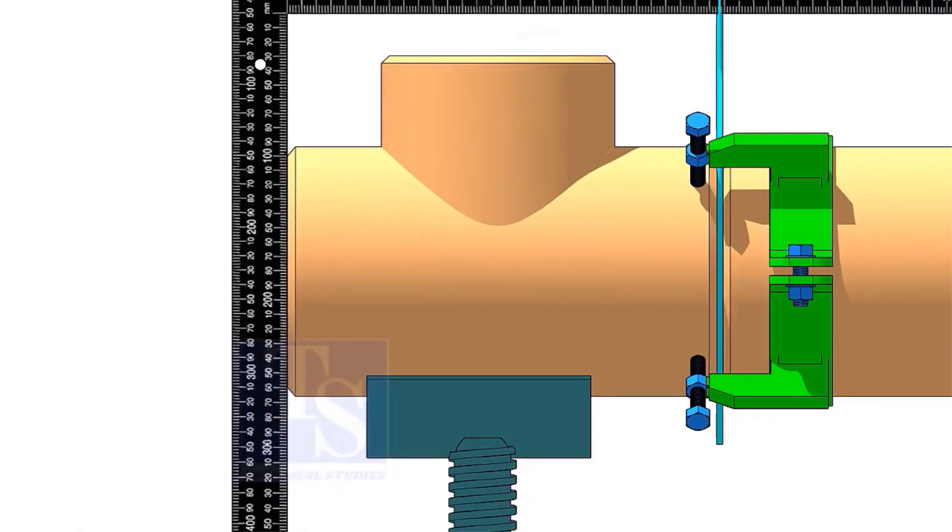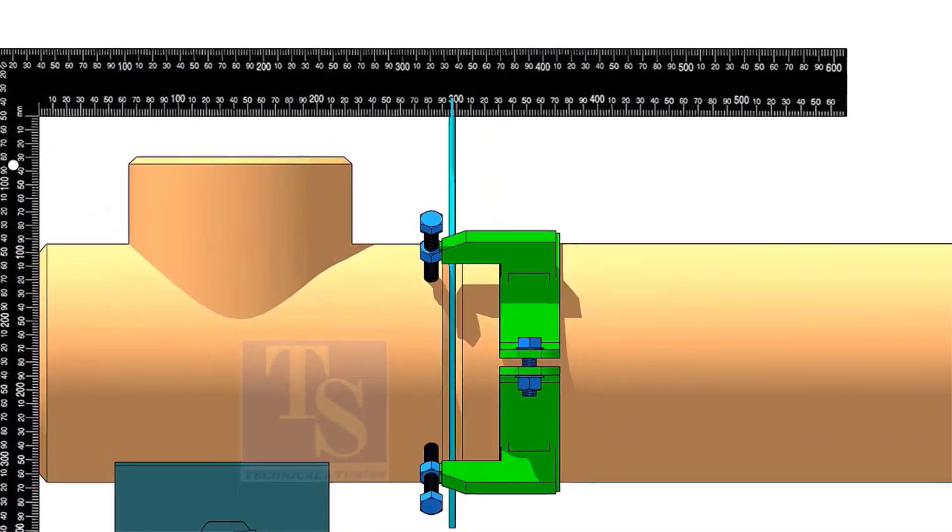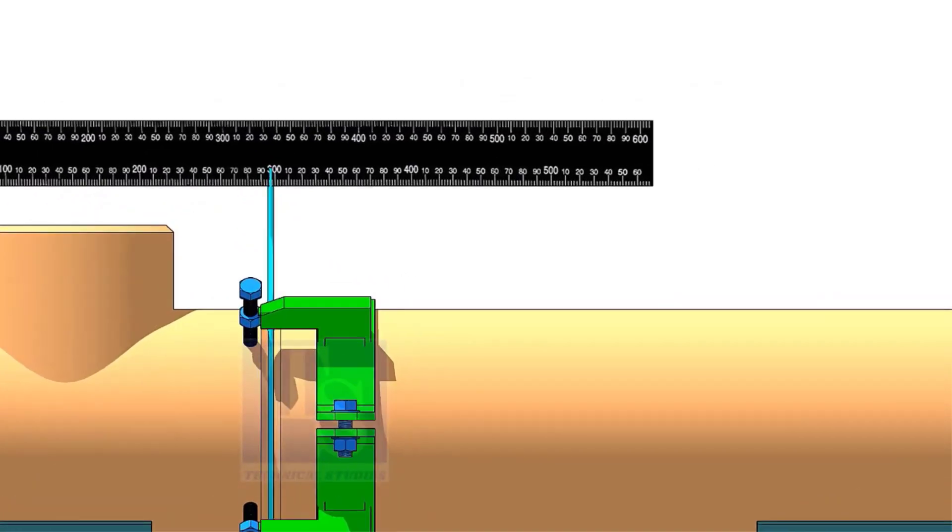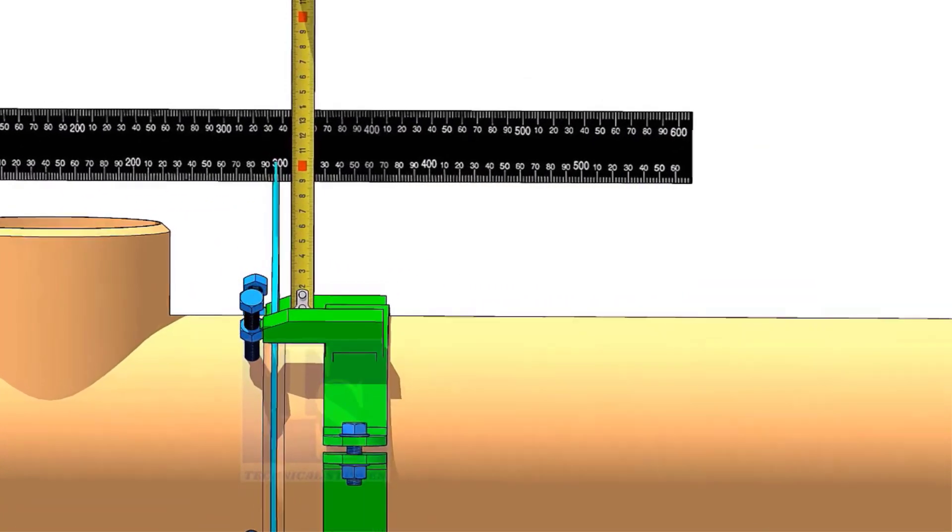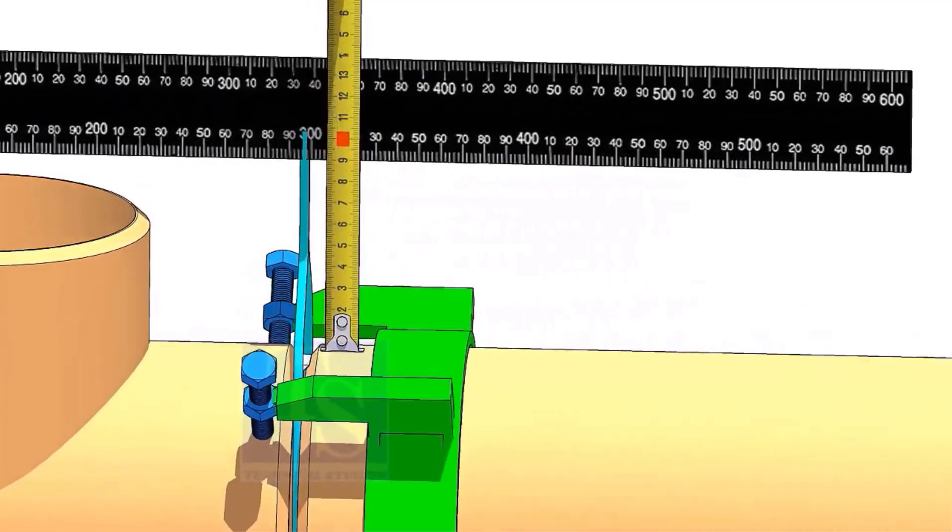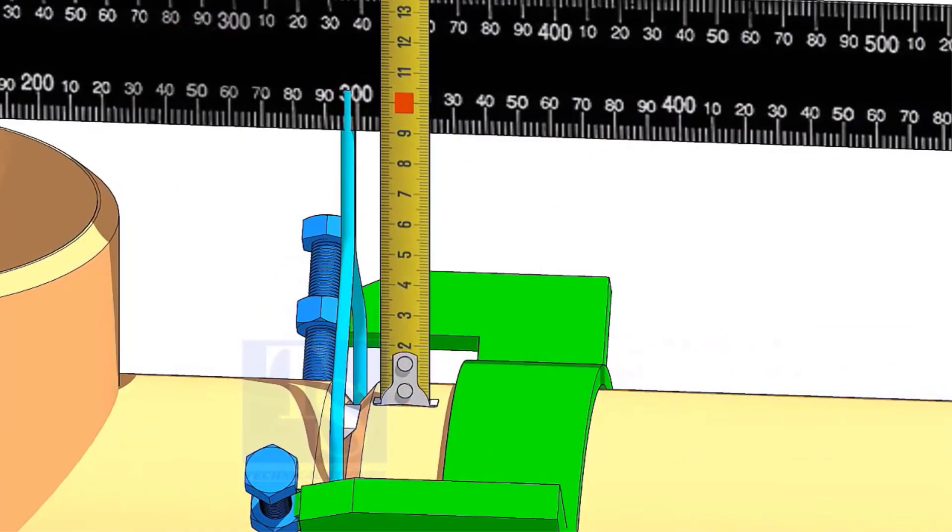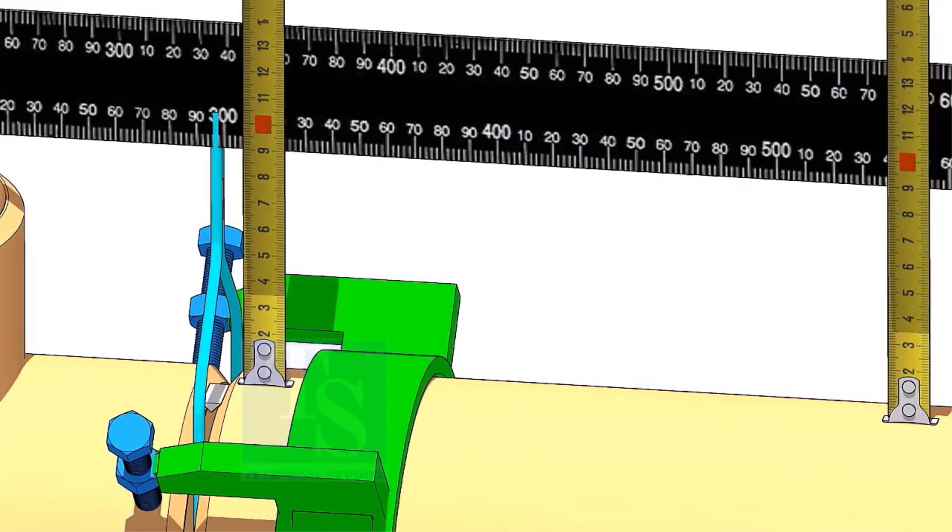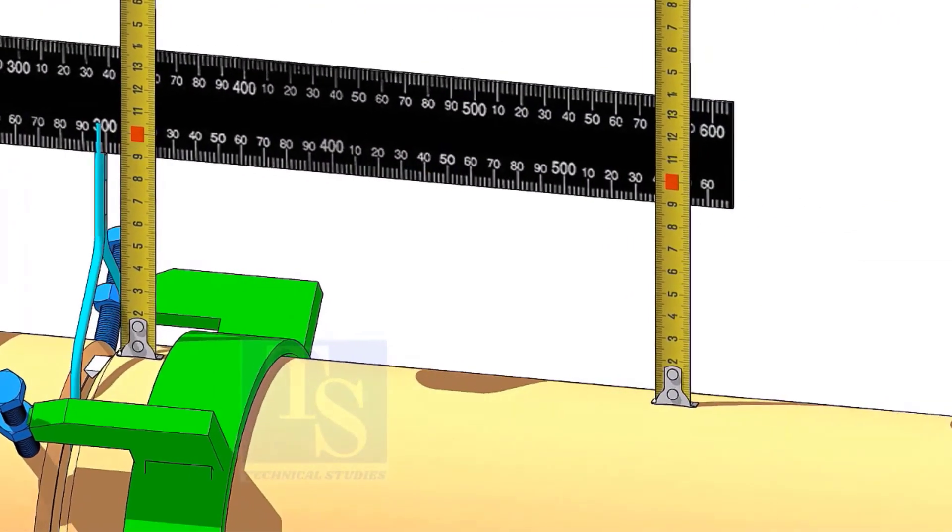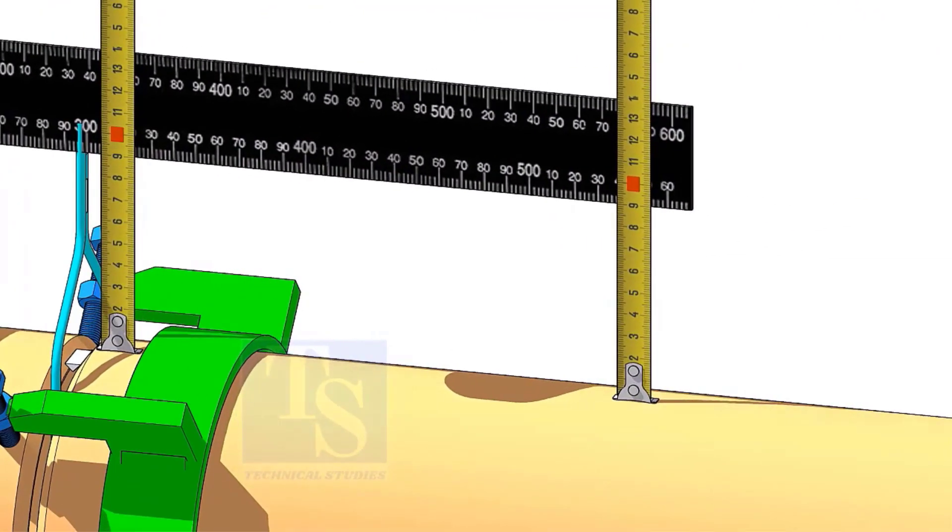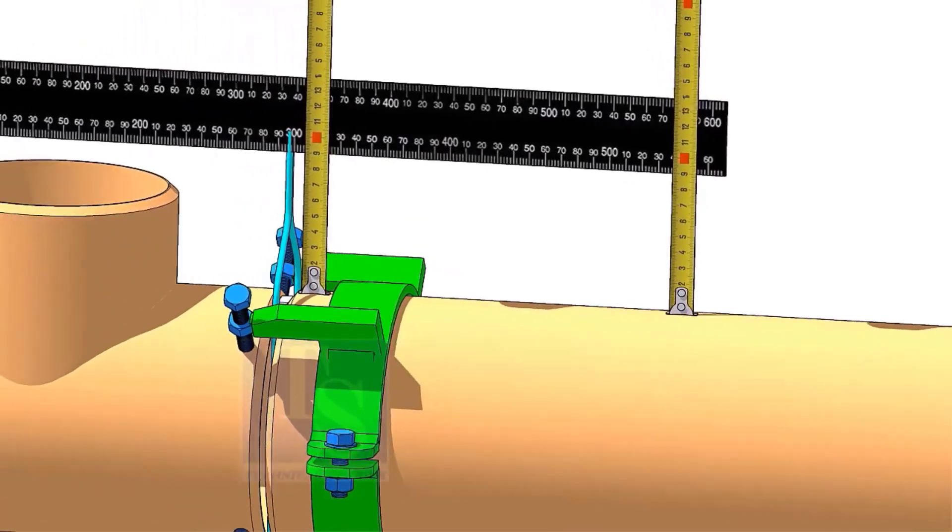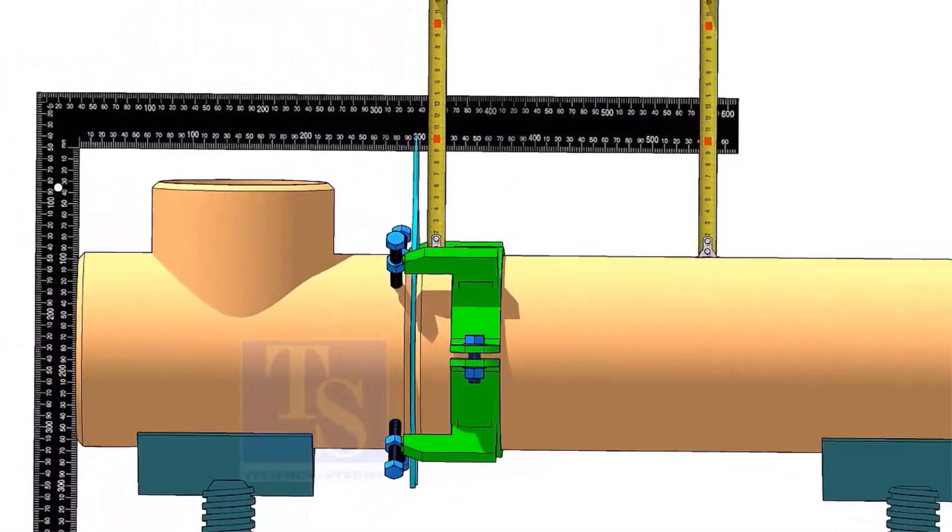Put a right angle on the face of the tee as shown, check the distance. Adjust the tee to correct the distance and tack weld at the bottom of the joint.